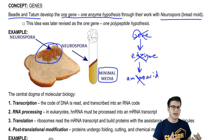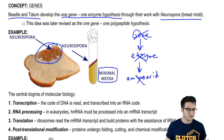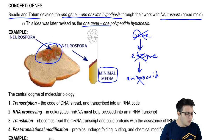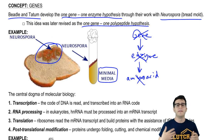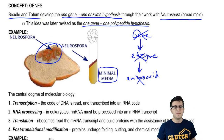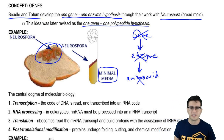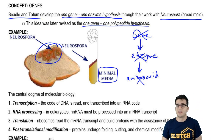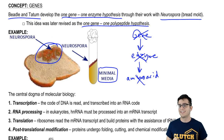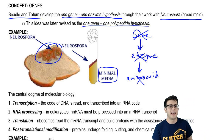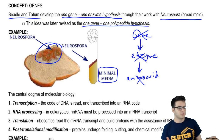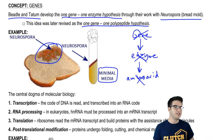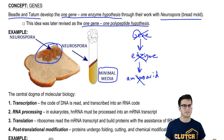However, this idea was later revised as the one-gene, one-polypeptide hypothesis because, of course, not all the proteins that are created from genes are enzymes — some of them do other things. Some act as signaling molecules, some act as protein channels in the membrane. There are a variety of uses of proteins. So they had to revise this idea as the one-gene, one-polypeptide hypothesis.